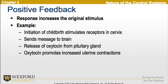Now, in addition to negative feedback, there's positive feedback as well, and this response increases the original stimulus. For example, during the initiation of childbirth, there's a stimulus in the receptors of the cervix. This sends a message to the brain, which triggers the release of oxytocin from the pituitary gland. The oxytocin then promotes increased uterine contractions. This is an example of positive feedback.